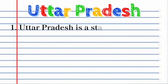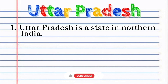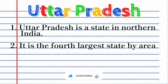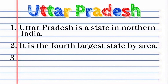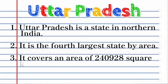Welcome to NTR Education. Uttar Pradesh is a state in Northern India. It is the fourth largest state by area. It covers an area of 2,40,928 km².